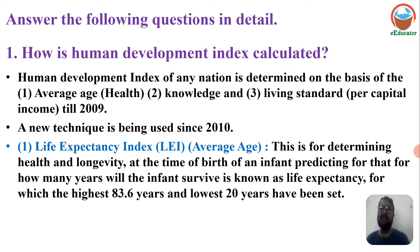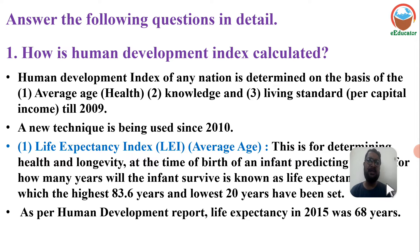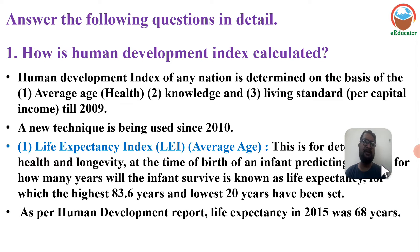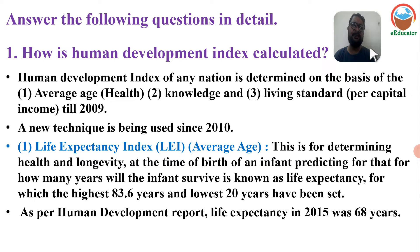As per the Human Development Index, the highest life expectancy parameter is 83.6 years and the lowest is 20 years. According to the Human Development Report, life expectancy in India in 2015 was 68 years.